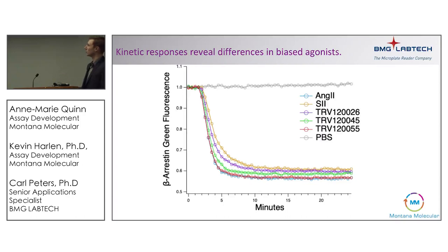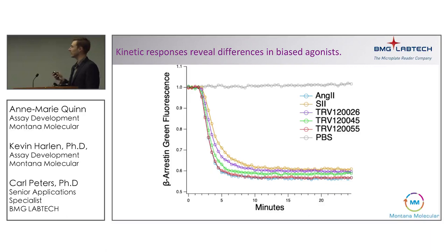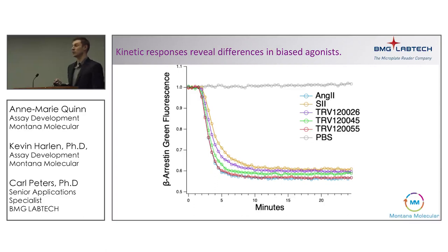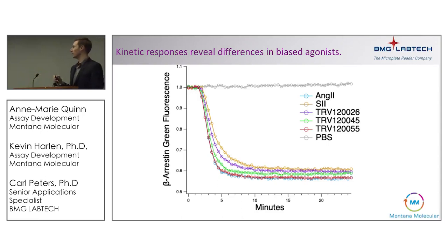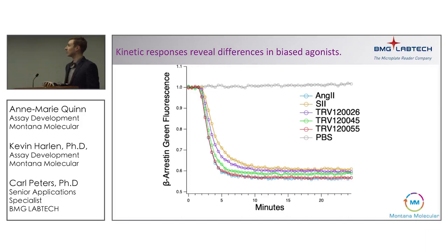The kinetic readout is really important for reliably quantifying differences in arrestin activation. Many assays, especially for arrestin, are endpoint assays where you add drug and look at samples around 20 minutes later — but by 20 minutes you're already experiencing a high level of data compression. The differences visible early in the kinetic response are compressed by around 20 minutes. The ability to monitor the kinetic response is therefore crucial for determining the bias ratio.